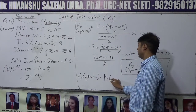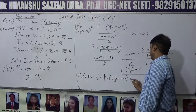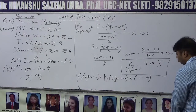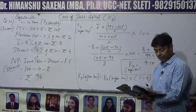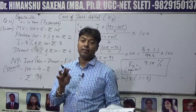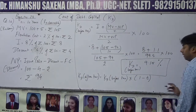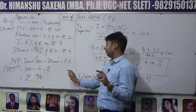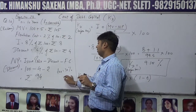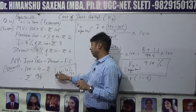Kd after tax के लिए formula है: Kd after tax = Kd before tax × (1 − tax rate). Tax rate question में देखिए — third line में दे हुआ है: tax rate is 30%.